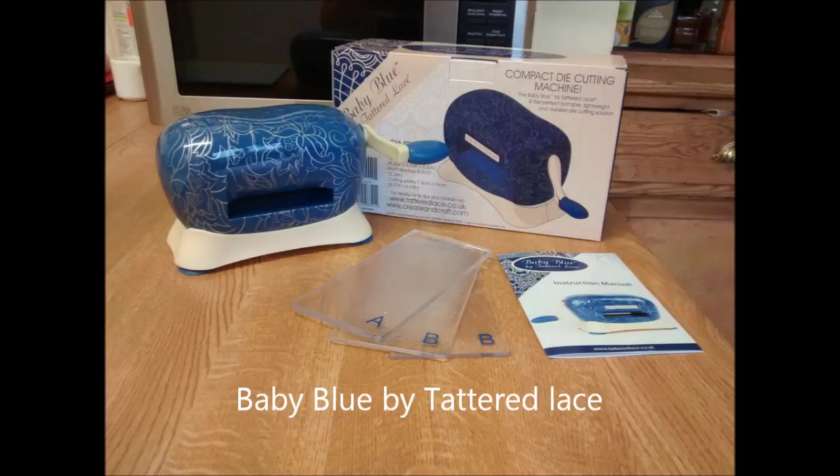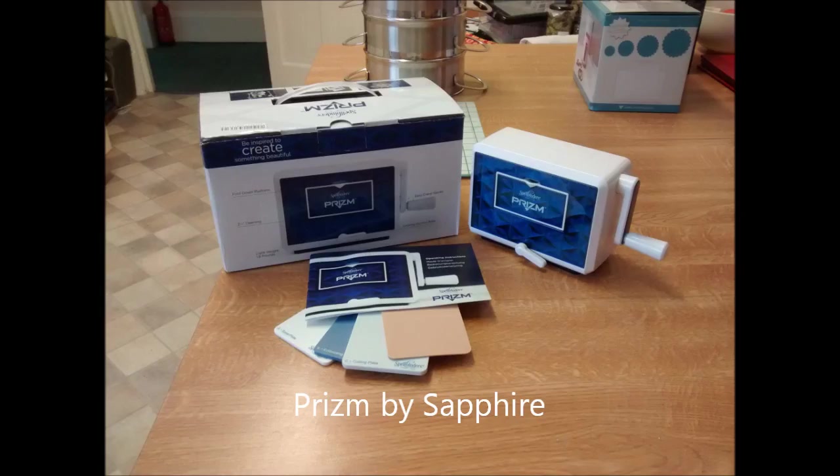Firstly, Tattered Lace Baby Blue. You get the basic machine and die-cutting plates only. The Prism from Sapphire also comes with an embossing mat but has slightly narrower plates.